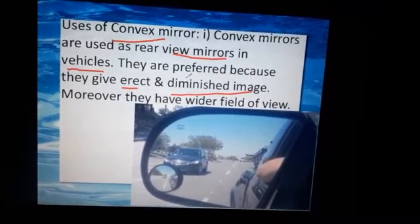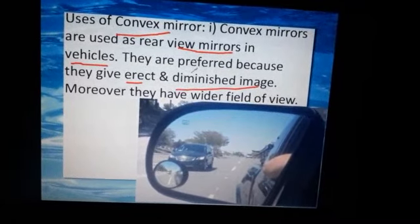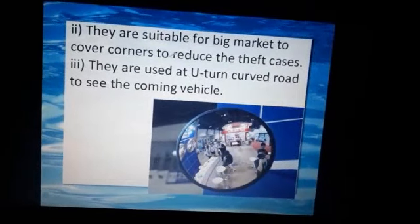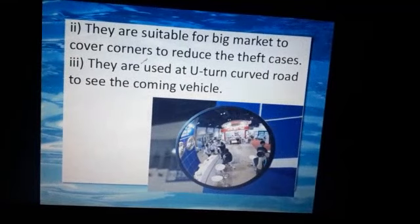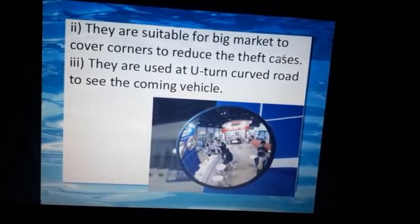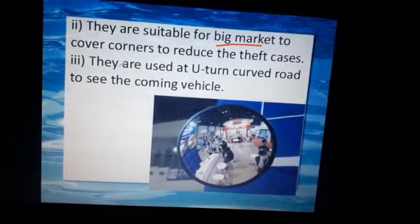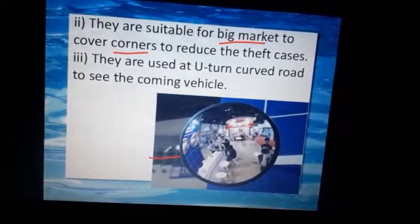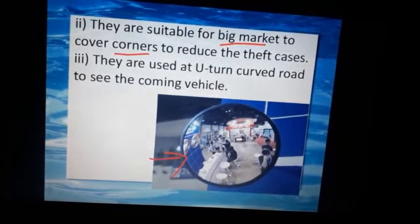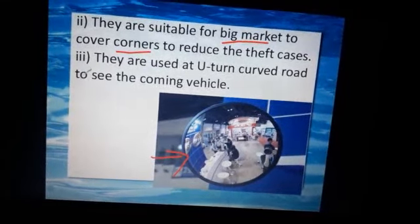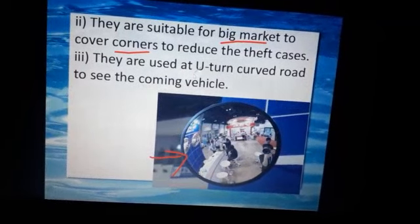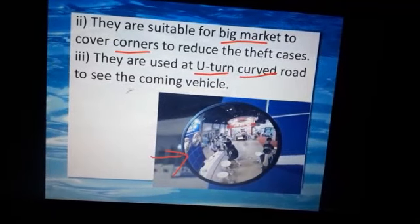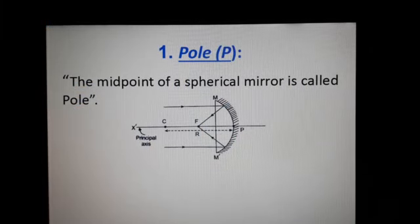The second use of the convex mirror: they are suitable for big markets to cover corners and reduce theft cases. In big markets the convex mirror is used because the total corner area is covered. Third, they are used at road turns to see the coming vehicle clearly.